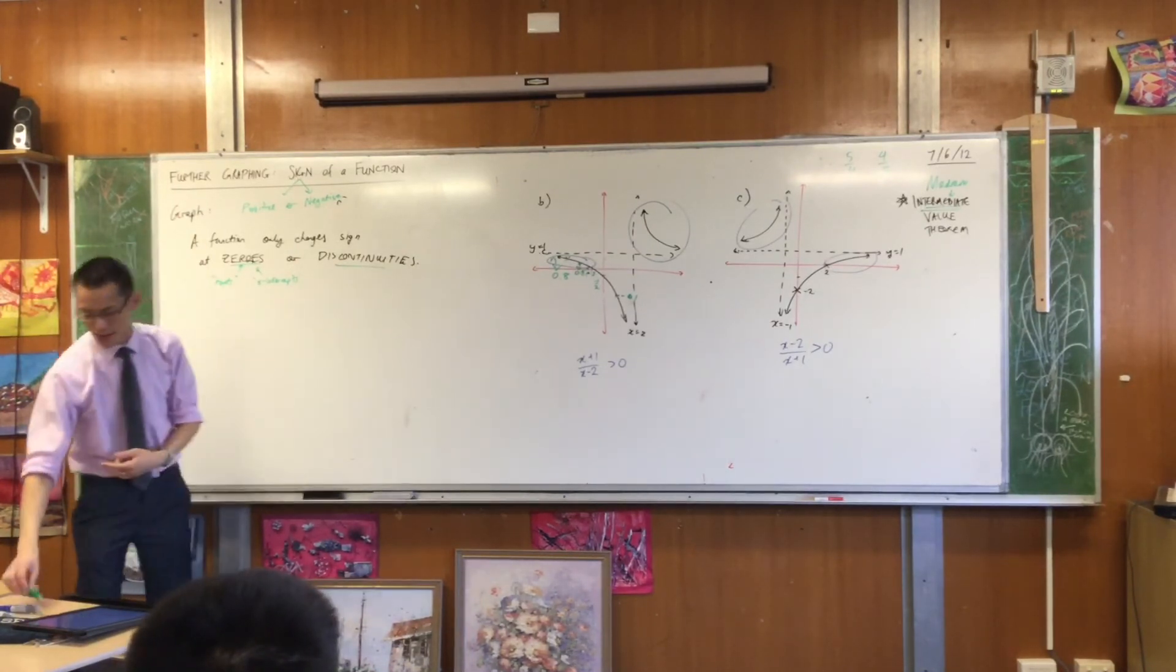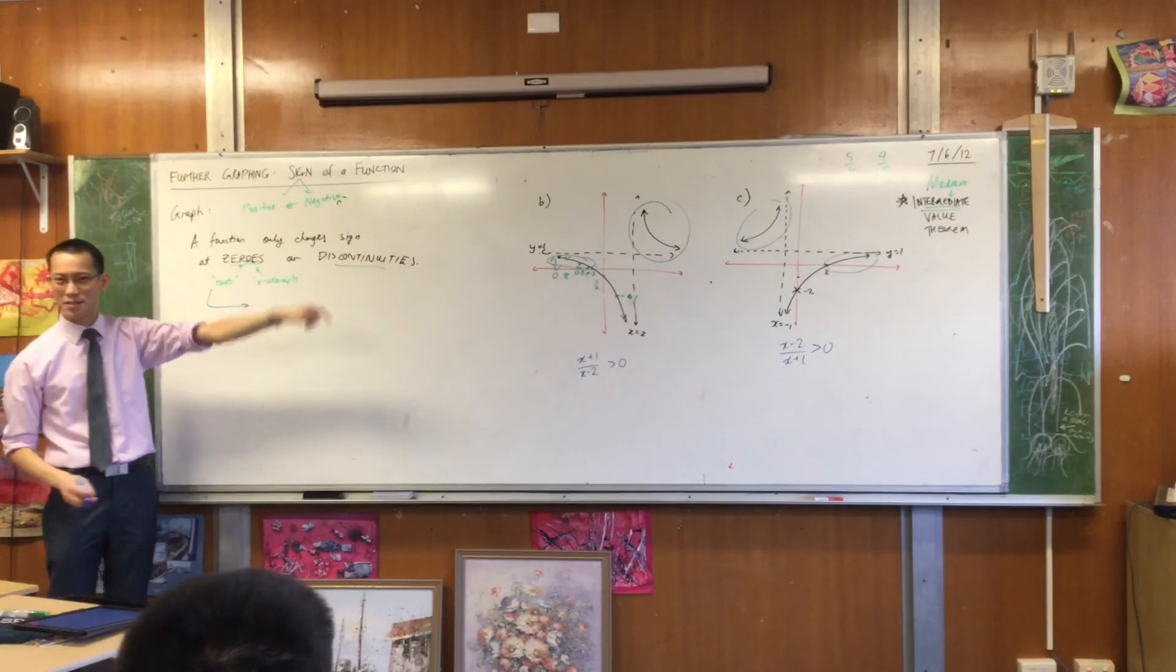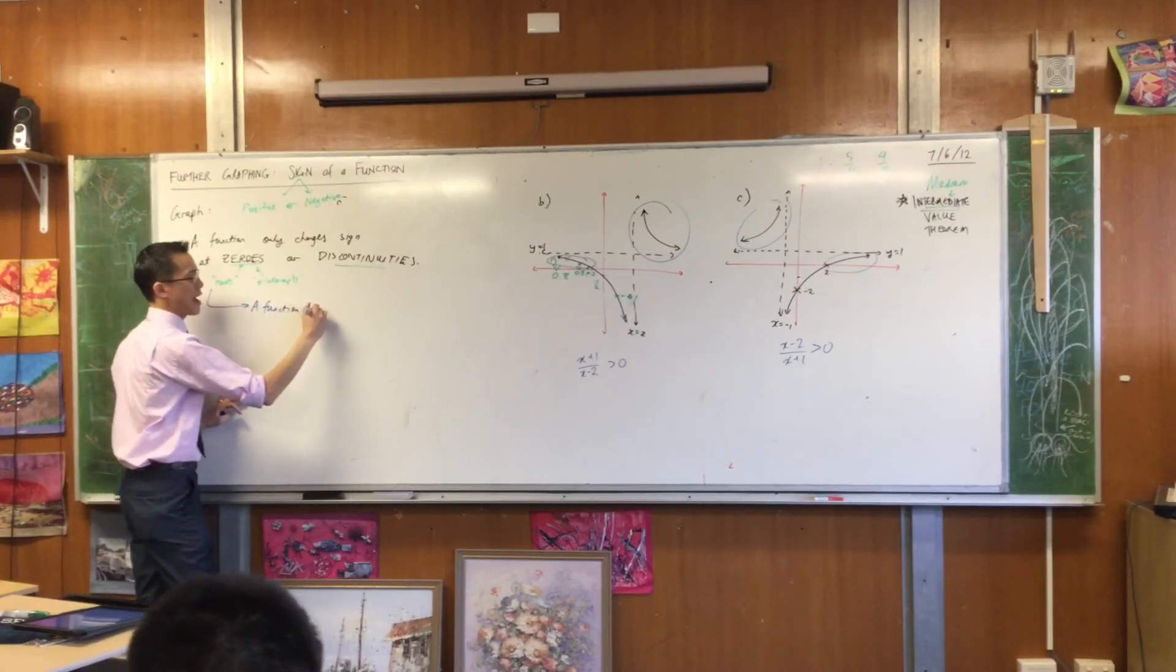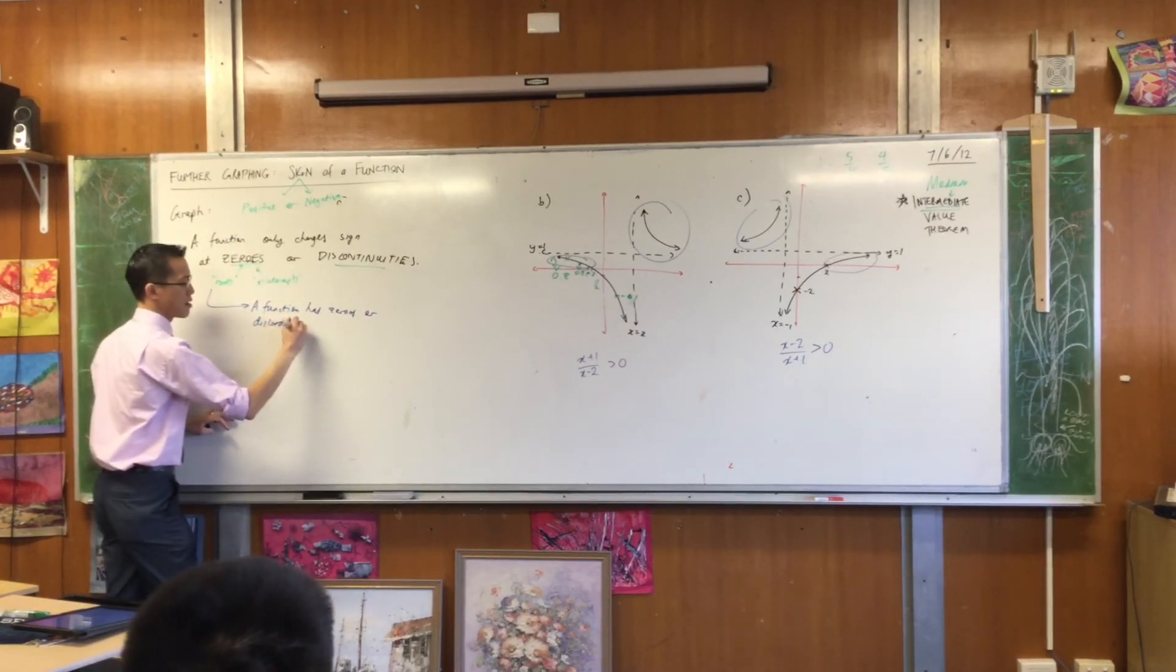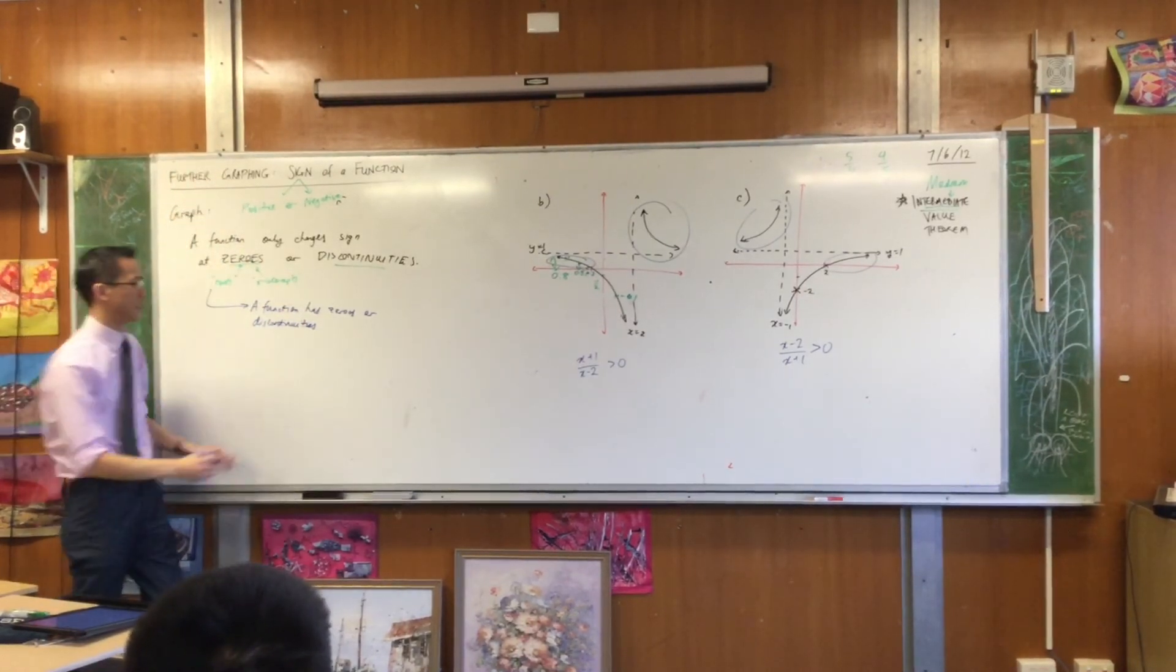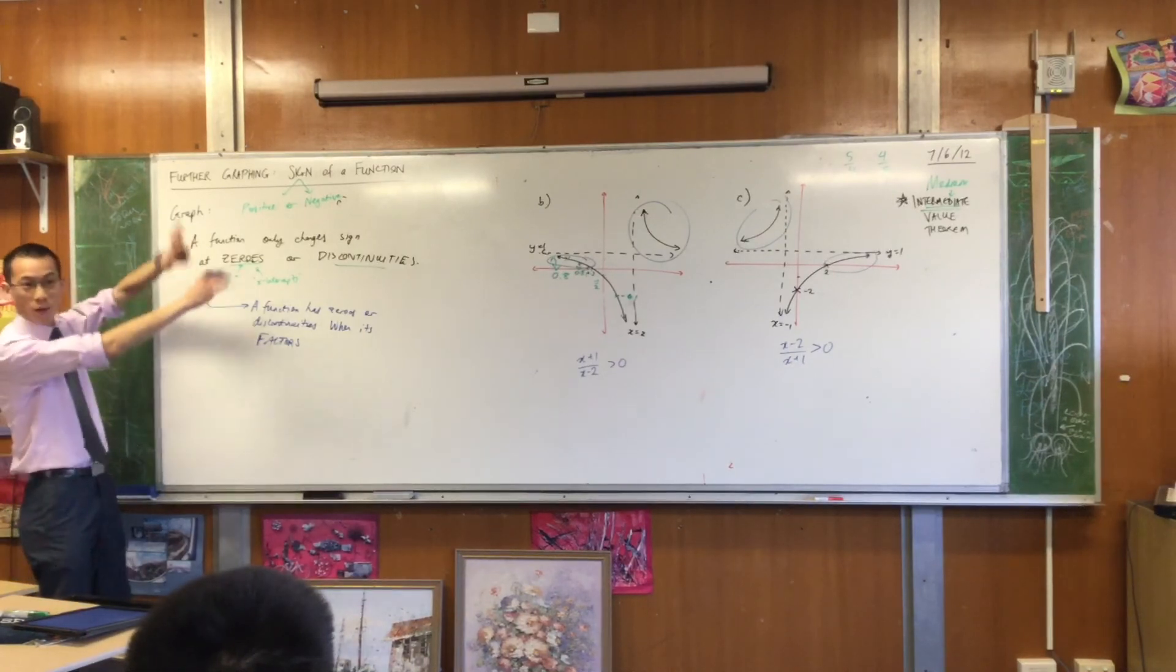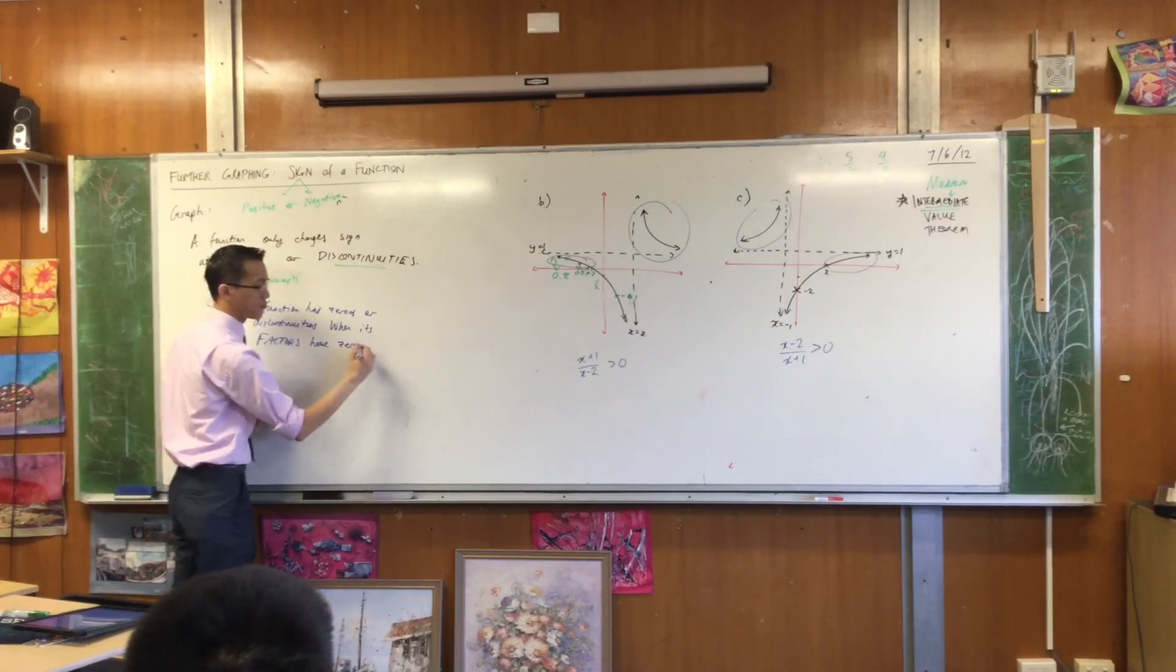So how does this account for this? Underneath, this is not part of the theorem officially, but it's what accounts for this. A function has zeros or discontinuities. And here's the important thing, that explains what we're looking at here, and why this is a really important, powerful idea for graphing. When it's factors, that's what Nindy identified for us, as the common thing between all of these functions. When it's factors, have zeros.